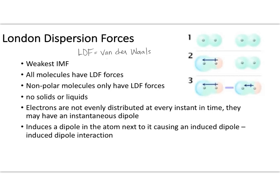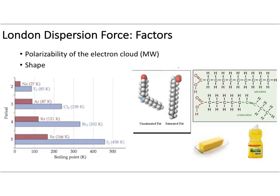London dispersion forces are affected by two factors: the polarizability of the electron cloud — usually connected to molecular weight — and the shape of your molecules. The more electrons you have, the more likely you are to have an instantaneous dipole, because the cloud can move around. Looking at the boiling points of neon, argon, krypton, and xenon, as you increase the size of those atoms you end up with more polarizability, more likelihood of forming an instantaneous dipole, stronger London dispersion forces, and subsequently higher boiling points. The same trend is seen with halogen molecules.